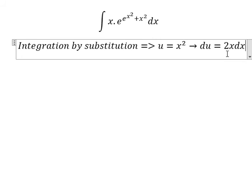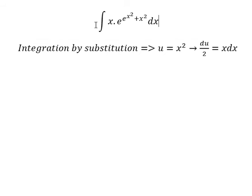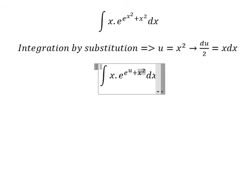Because we don't have the number 2 in the integral, we divide both sides by 2. Now we change this integral: x squared becomes u, x squared becomes u, and x dx becomes du over 2.